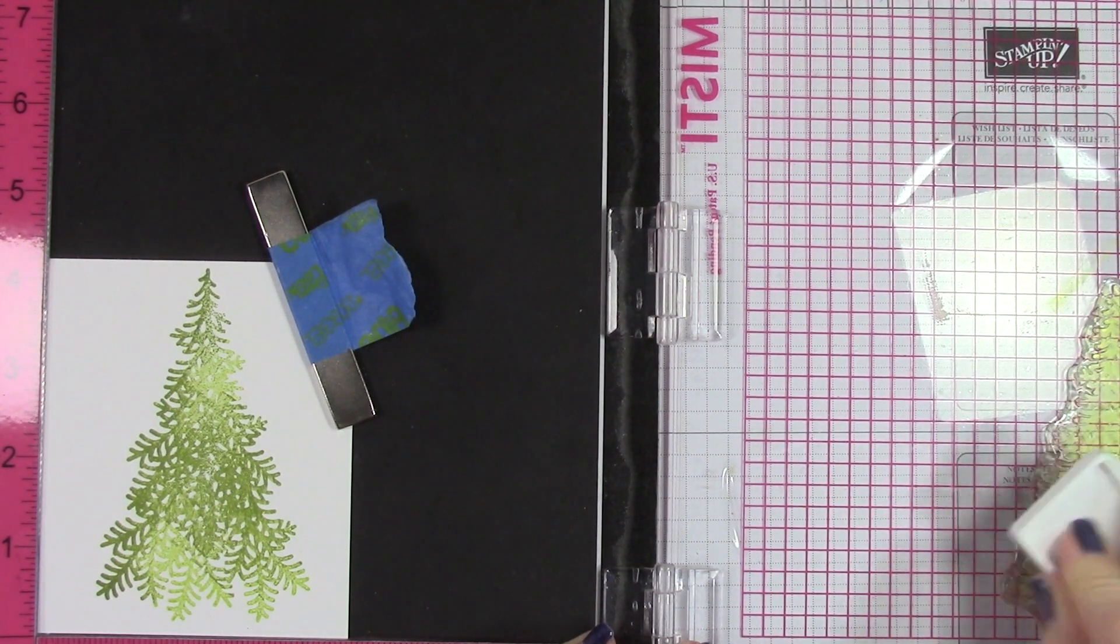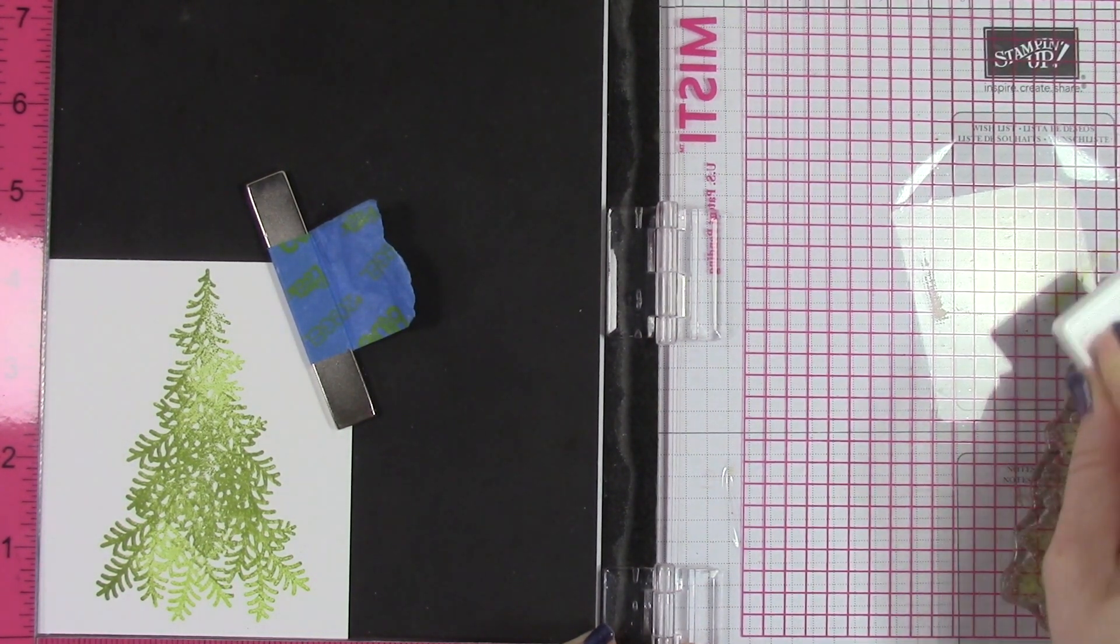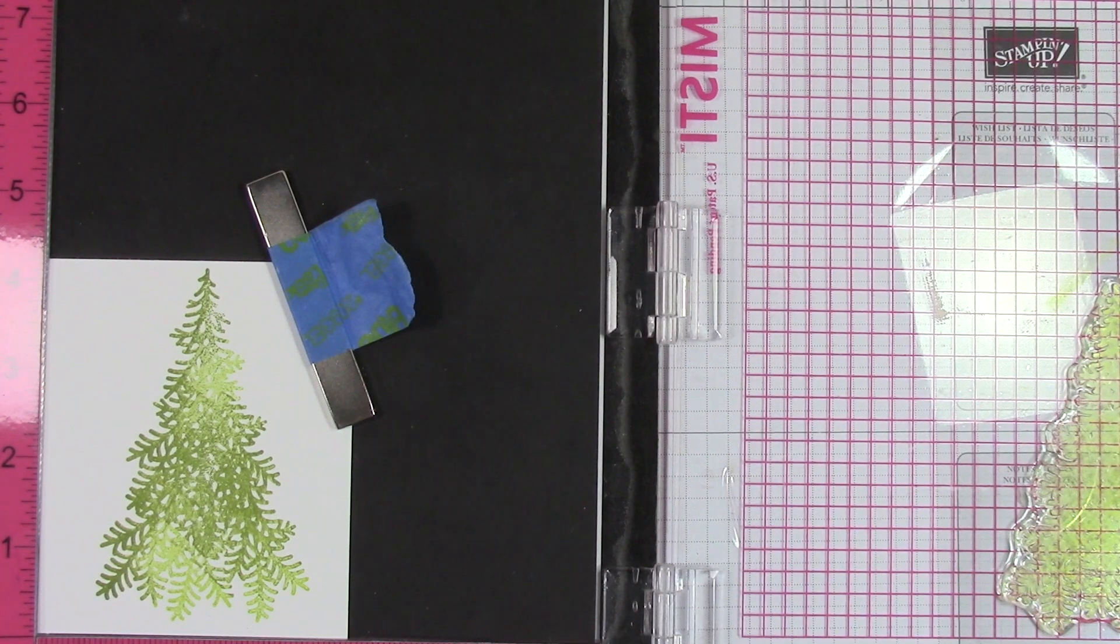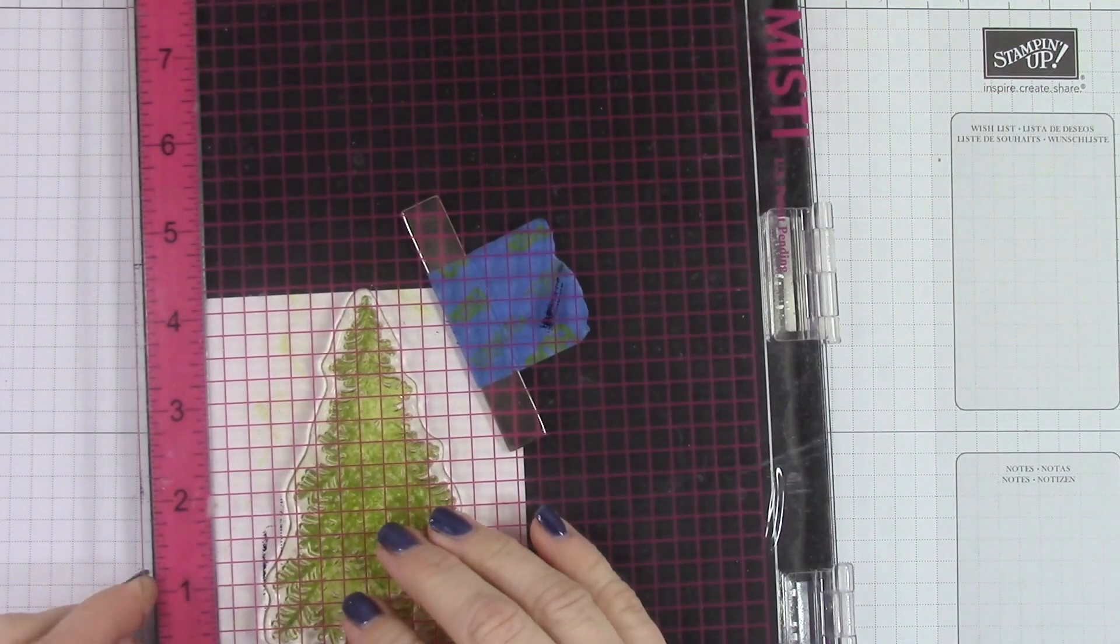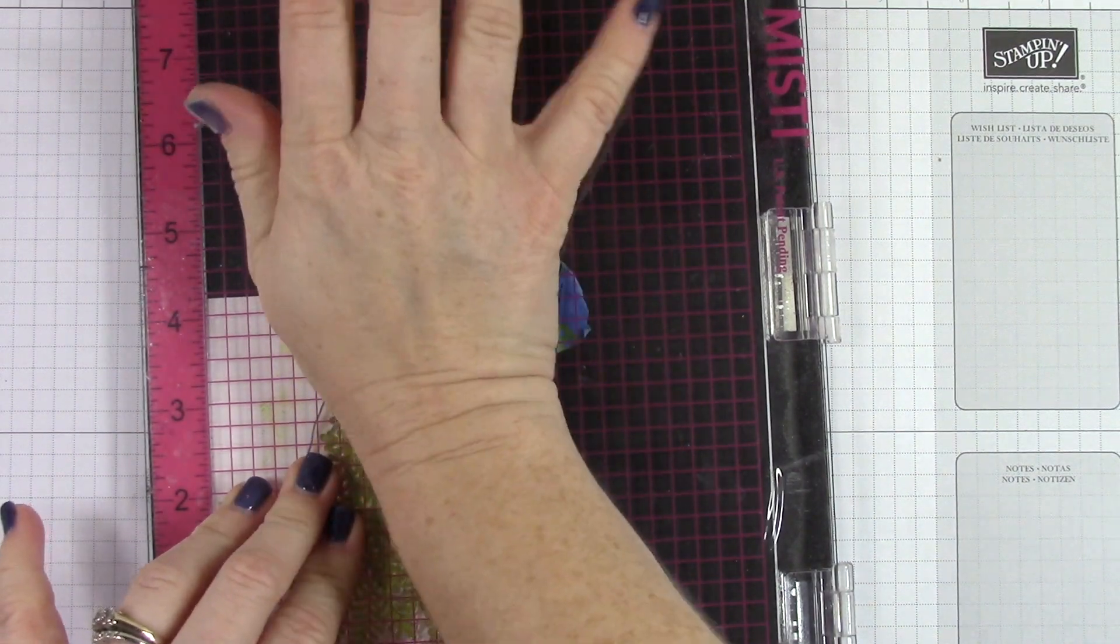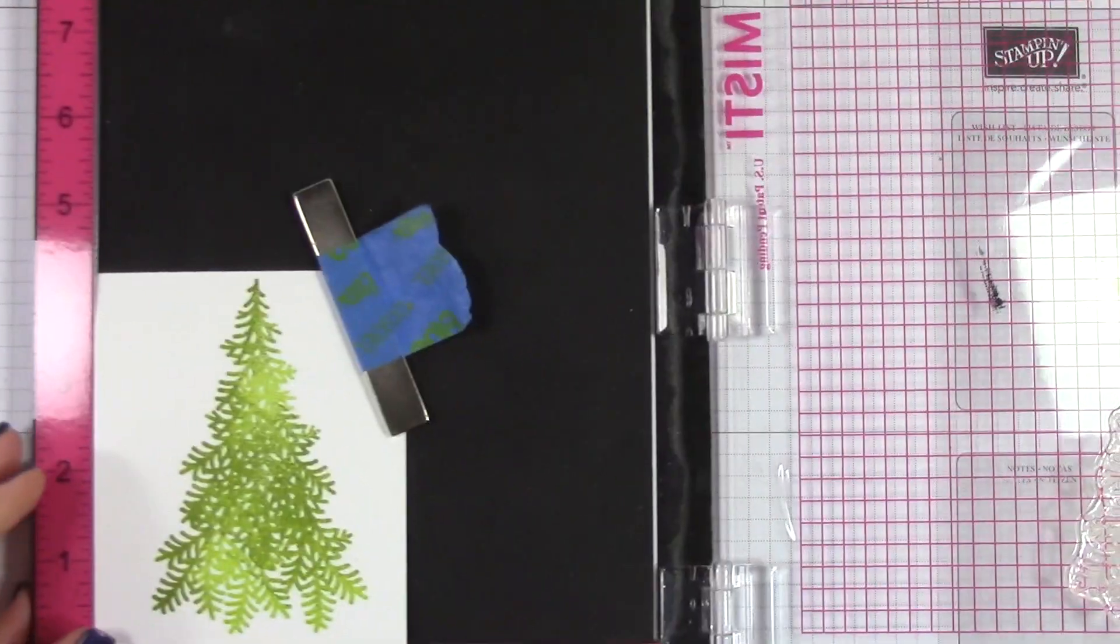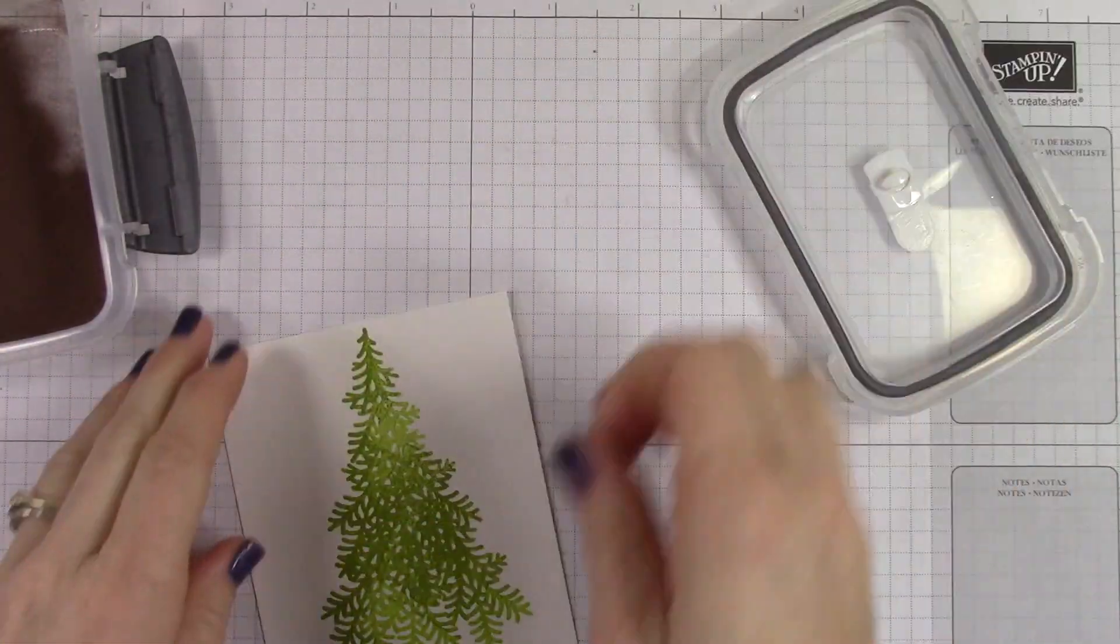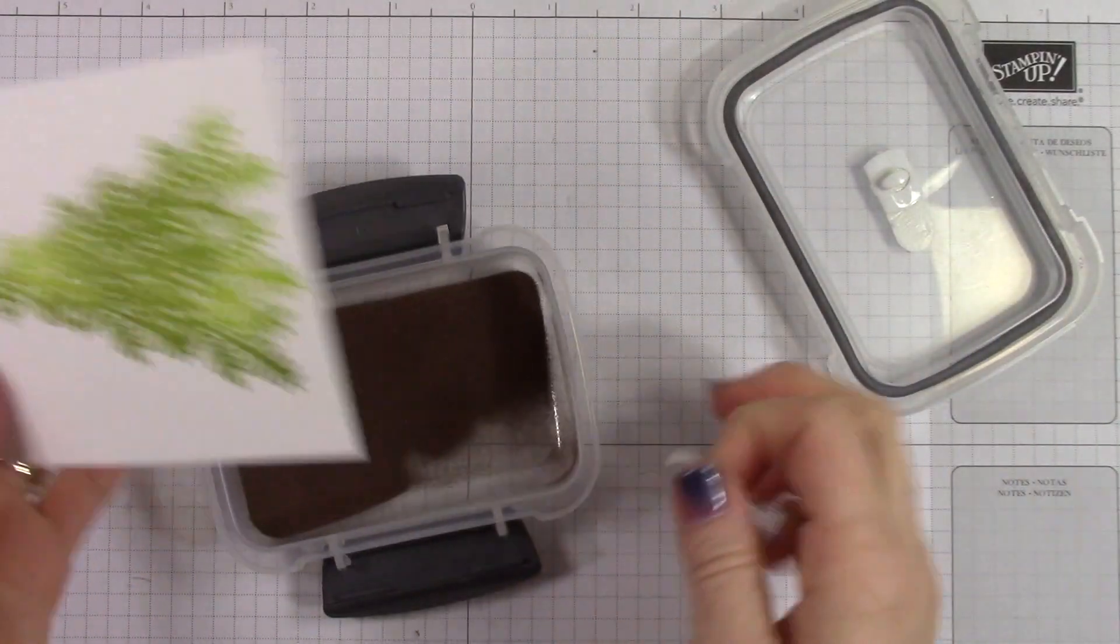You might notice I'm using these little bitty ink spots. This was my daughter's idea - so I subscribe to Paper Pumpkin, so every month I get a little bitty ink spot with my Paper Pumpkin kit and I hang on to those. She said, 'Mom, when you're making stuff different colors, you should just use the ink spots. It would be a lot easier.' God, she's smart.